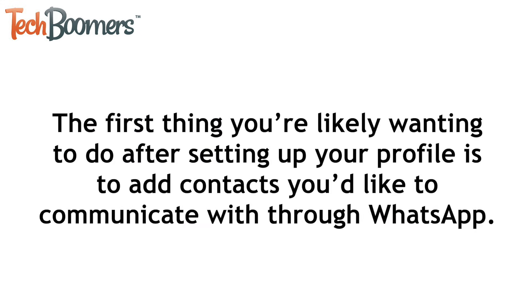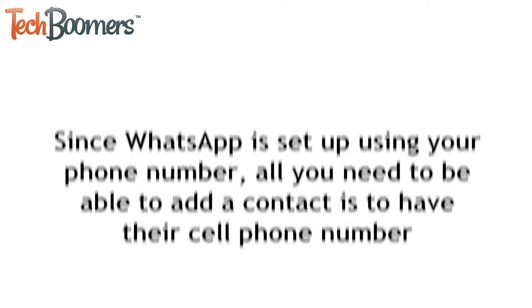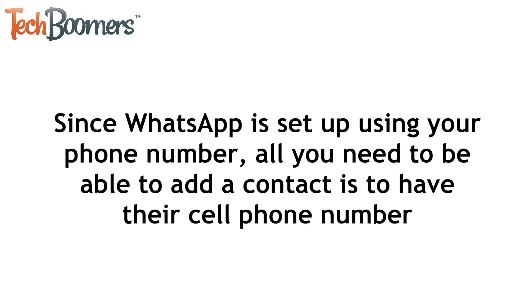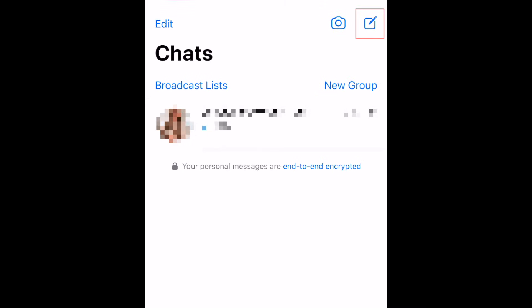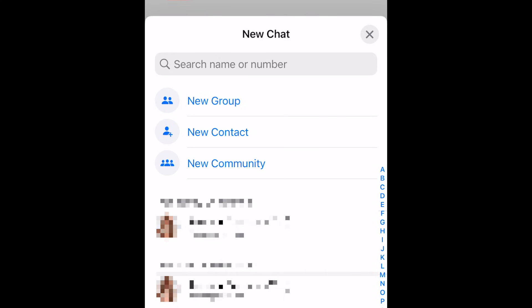The first thing you're likely wanting to do after setting up your profile is to add contacts you'd like to communicate with through WhatsApp. Since WhatsApp is set up using your phone number, all you need to add a contact is their cell phone number. Start a new conversation by tapping the chat icon in the top right corner. You'll then be able to see your contacts that are using WhatsApp. Tap the name of the contact you'd like to chat with, or type their name in the search bar at the top.